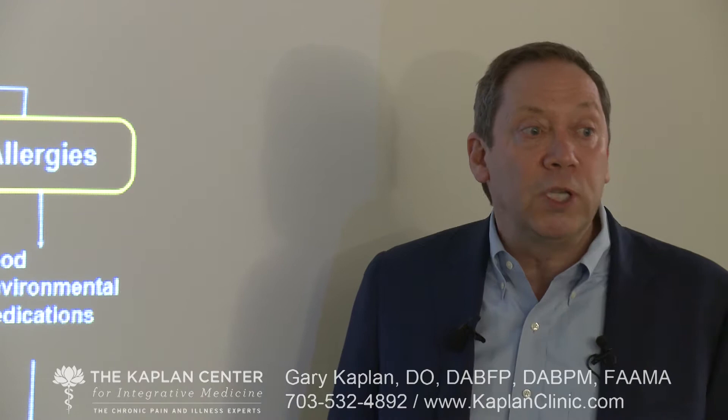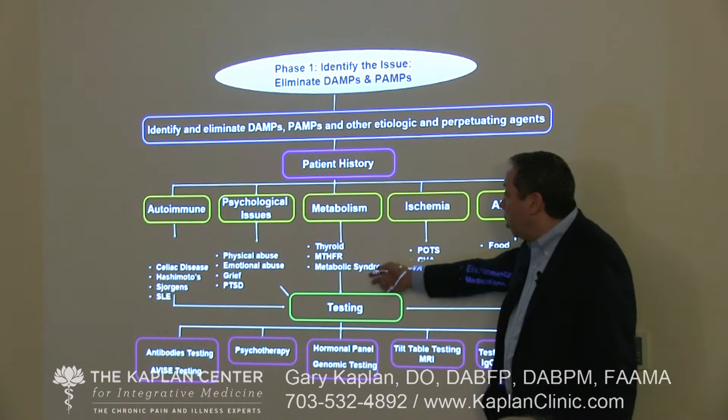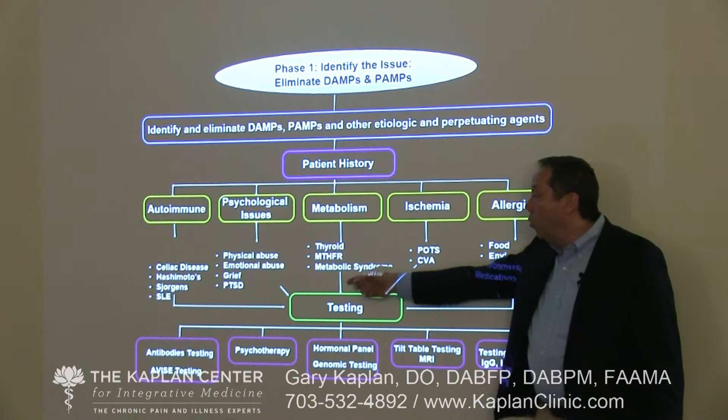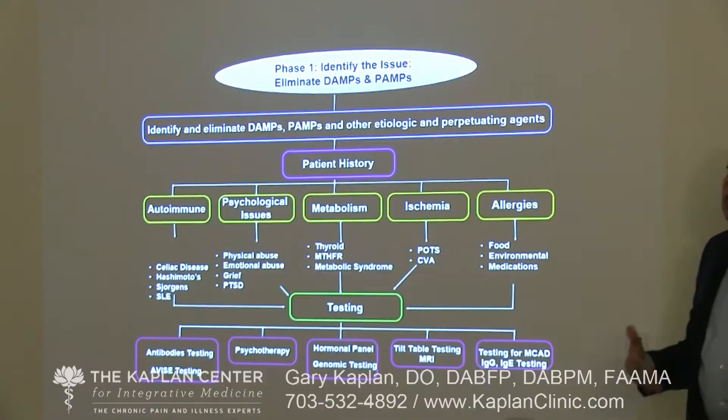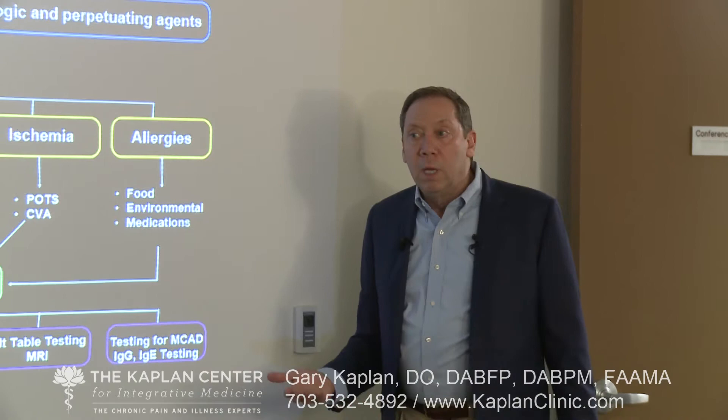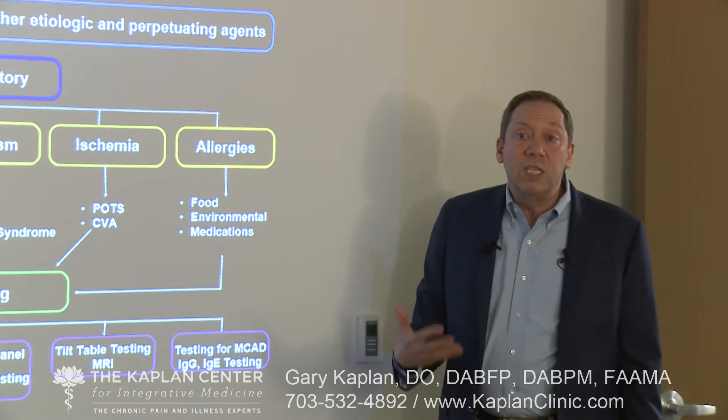Metabolic issues: we know that inflammation in the central nervous system disrupts the endocrine system. We also need to pay attention to things like MTHFR, because without properly methylated folic acid the nervous system doesn't work well. Testing genetically for MTHFR and metabolic syndrome — all of these can feed into a chronic pain situation.